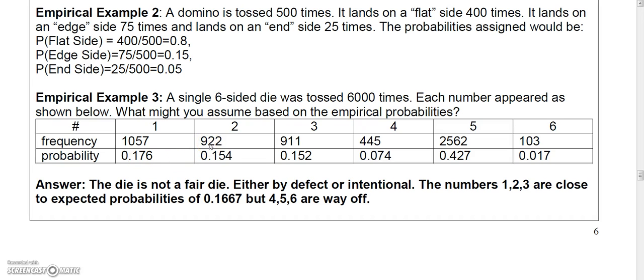Let's say you got a 2,922 times. So take 922 and divide it by 6,000 and you get 0.154. And then you got a 3,911 times. So divide that by 6,000 and you get 0.152.